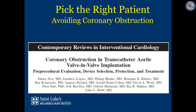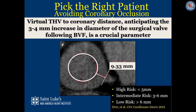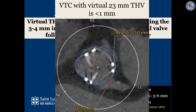There are important caveats to achieving these results. The first is picking the right patient and avoiding coronary obstruction. Following valve-in-valve TAVR, the risk of coronary obstruction is higher than in native valve TAVR. Virtual transcatheter heart valve to coronary distance, or VTC, is a crucial parameter. You have to anticipate a 3 to 4 mm increase in the diameter of the surgical valve following BVF and calculate the VTC based on that virtual implant. For example, a VTC of less than 1 mm for both coronaries would put a patient at high risk for valve-in-valve TAVR and BVF, unless a mitigating strategy such as BASILICA was implemented.